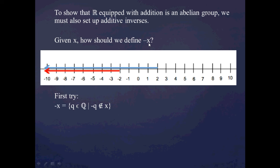If I take a look at the visual representation of a Dedekind cut — let's say I have the two cut as this blue line and the negative two cut as the red line — given some x, I want to set up a definition for negative x. Here's the first try: define negative x as all the rational numbers whose negation is not in x. This is a pretty good first try. For example, I look at negative four and observe that four, its opposite, is not in x.